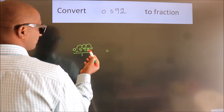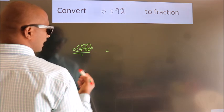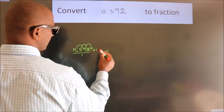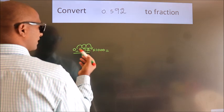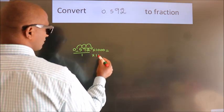To move this decimal three places, we have to multiply it by one thousand. Whatever number you are multiplying in the numerator, in the denominator also do the same.